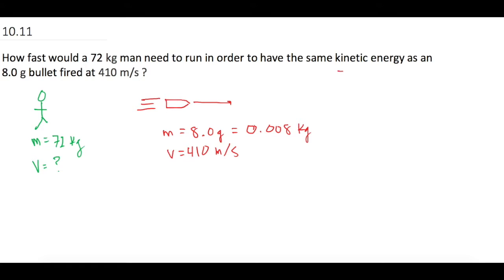And we want kinetic energy. So kinetic energy, if you remember, kinetic energy is equal to 1 half mv squared. So let's figure out how much energy we have to deal with with the bullet.